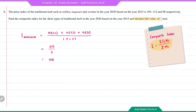Now we want to interpret the value of the composite index, which is 105. When the composite index is more than 100, it means there will be an increase compared to the base year. We find the increase in percentage by 105 minus 100, which is 5%. Therefore, the composite index of 105 means the price for the 3 types of traditional kueh in the year 2020 increased by 5% compared to the year 2015.